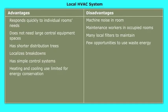Advantages of a local HVAC system include: responds quickly to individual rooms' needs, does not need large central equipment spaces, has shorter distribution trees, localizes breakdowns, has simple control systems, and heating and cooling use is limited for energy conservation. Disadvantages include machine noise in room, maintenance workers in occupied rooms, many local filters to maintain, and few opportunities to use waste energy.